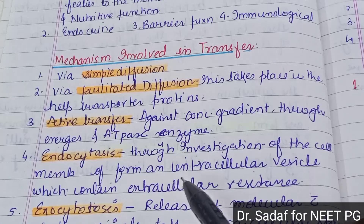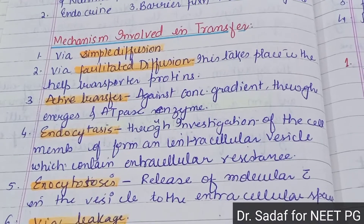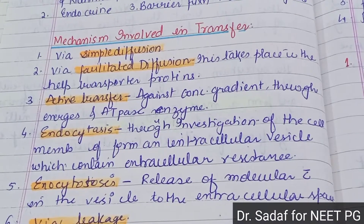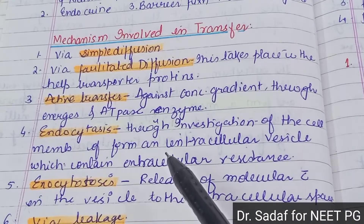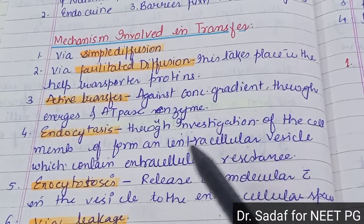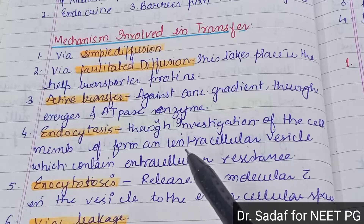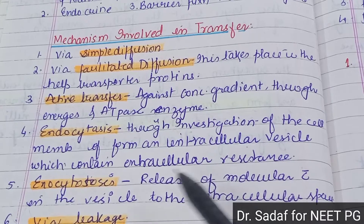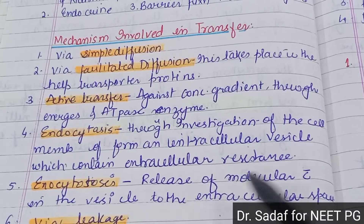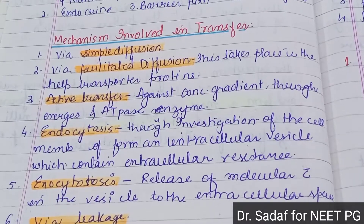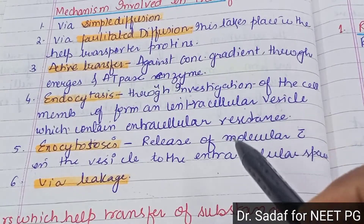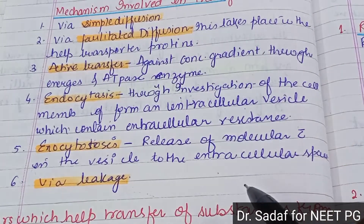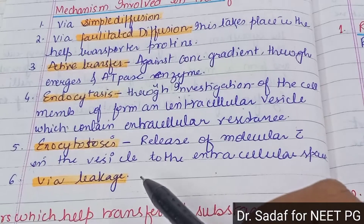Another mechanism is endocytosis — through invagination of the cell membrane. An invasion happens through the cell membrane to form an intracellular vesicle, which contains extracellular material. Exocytosis is the release of molecules within vesicles into the extracellular space, or via leakage.